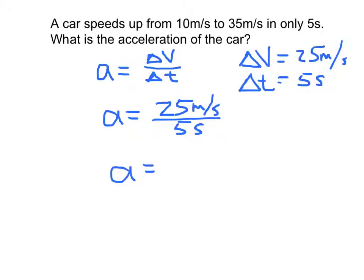And we see that 25 divided by 5 is 5, of course. And we also see that a meter per second over a second is going to be a meter per second for every second. So we have a meter per second on top and we have another second on the bottom, telling us that this car is increasing, or changing velocity, by 5 meters per second for every second of the 5 second interval.